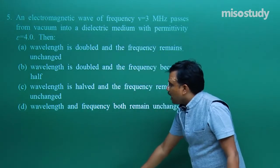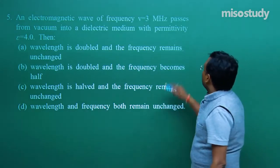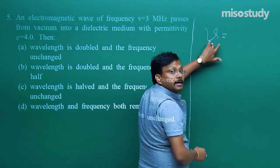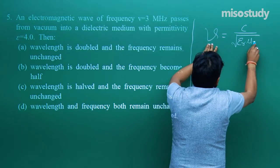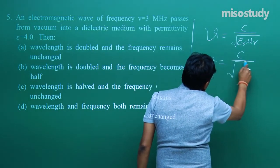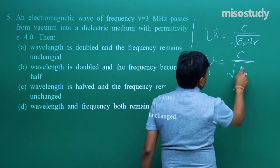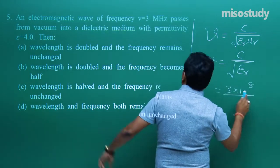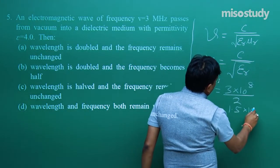B and D are now rejected. To find the answer, use V = C / √(ε_r · μ_r). Since μ_r ≈ 1, V = C / √ε_r = (3×10⁸) / √4 = (3×10⁸) / 2 = 1.5×10⁸ m/s. Now from ν = C/λ and ν = V/λ′, since both equal ν: λ′ = λ × (1.5×10⁸ / 3×10⁸) = λ/2. So the wavelength is halved and frequency remains unchanged — option C.